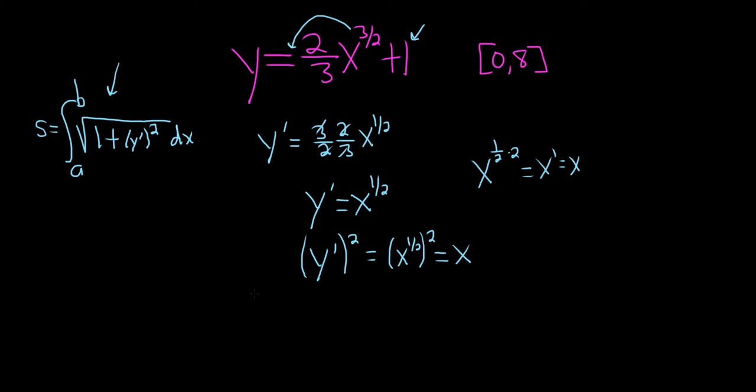All right, so then we just have 1 plus y prime squared. That's just 1 plus x. So let's go ahead and try to integrate this. So putting everything back into our formula, little s is equal to the definite integral from, well, in this problem, a is equal to 0, and b is equal to 8. So it'll be 0 to 8. And then we have the square root of 1 plus x dx.